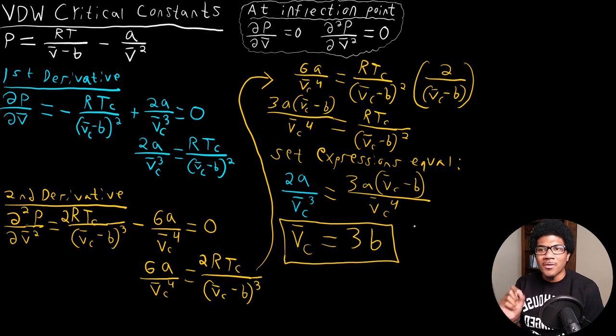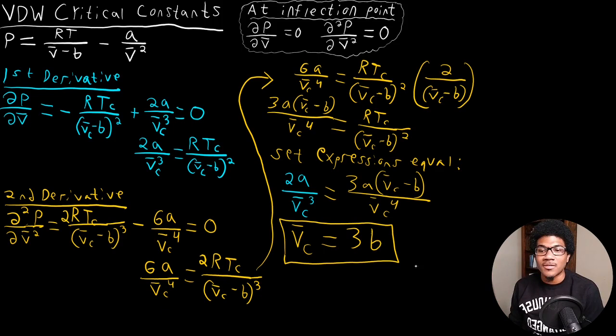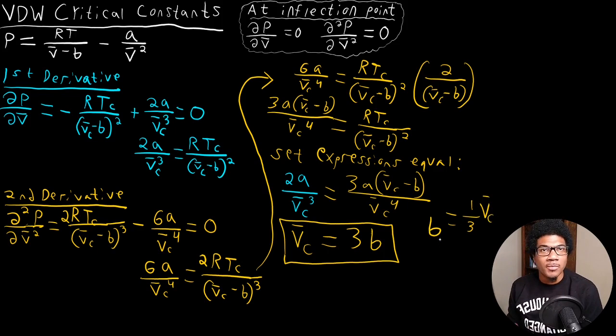This works the other way around as well. It's actually a really common procedure to experimentally determine the Van der Waals coefficients. By looking at the points at which gases liquefy, we can get these coefficients. This also means that b equals one-third v bar C — so if you measure the critical molar volume experimentally, you can extract the Van der Waals coefficient b.